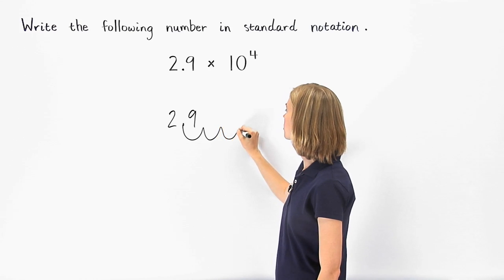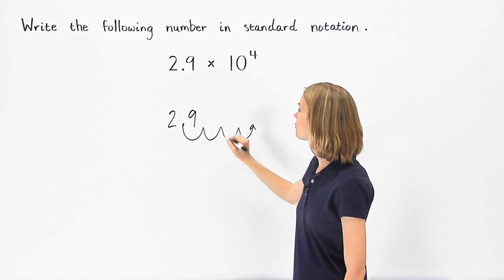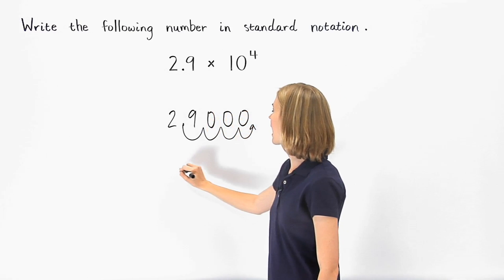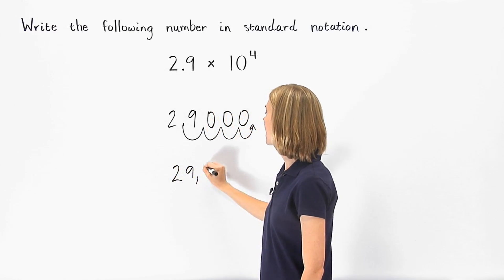One, two, three, four. Filling in the missing places with zeros, we have 29,000.